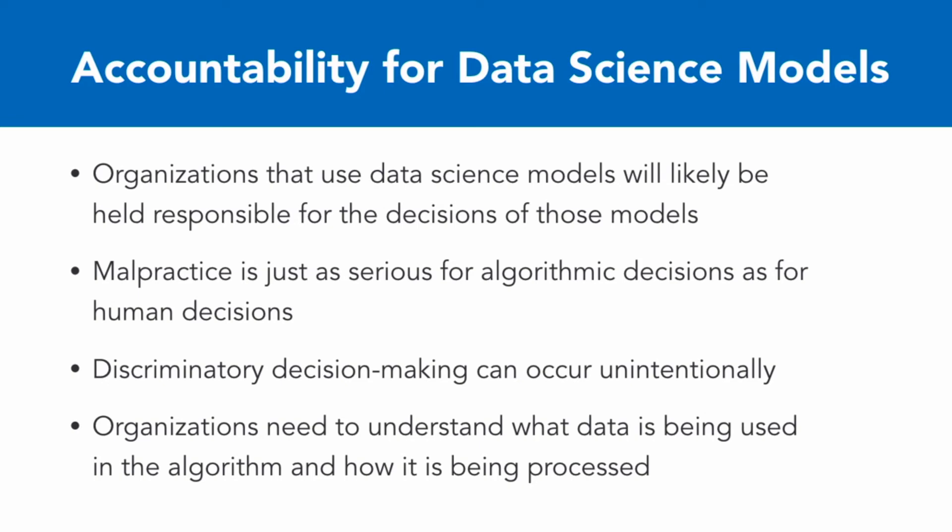One other thing to remember is that discriminatory decision-making can occur unintentionally. A lot of times the idea is that a data science algorithm is completely value-neutral because it doesn't have its own prejudices and biases, but those biases can be incorporated in the gathering of the data, the coding of the data, the creation of the algorithm, and the interpretation and checking of the output. Just because you've handed it off to a machine doesn't make it automatically perfectly objective — it often reflects the assumptions and social biases that go into the data in the first place.